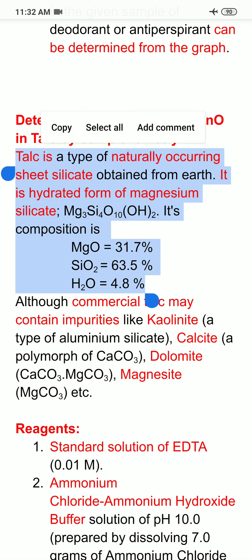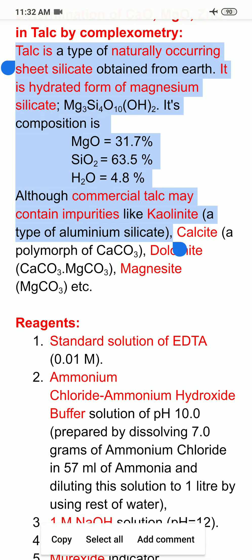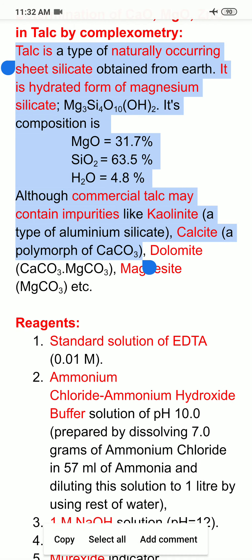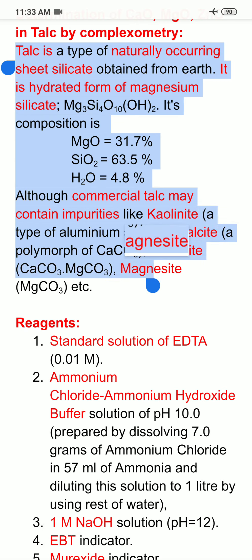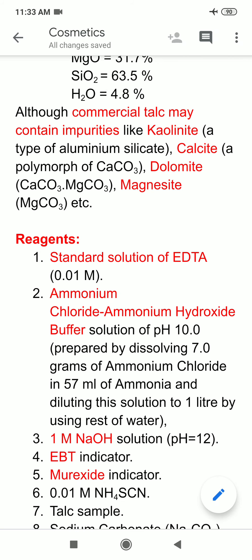In addition to these main constituents, commercial talc may sometimes contain impurities like kaolinite, which is a type of aluminum silicate. It may also contain calcite, which is a polymorph of calcium carbonate — meaning calcium carbonate can exist in more than one type of structure. Dolomite, a mixed carbonate of calcium and magnesium, and magnesite, magnesium carbonate, may also be present as impurities in talc.